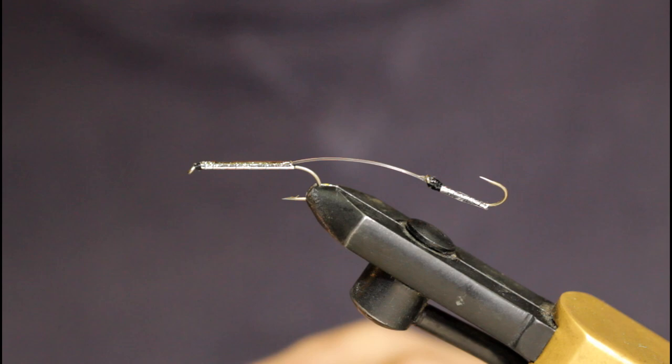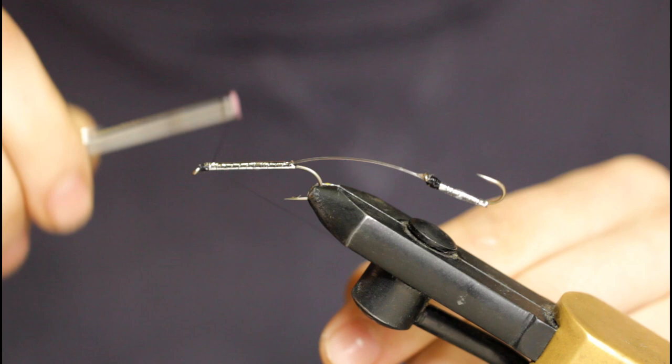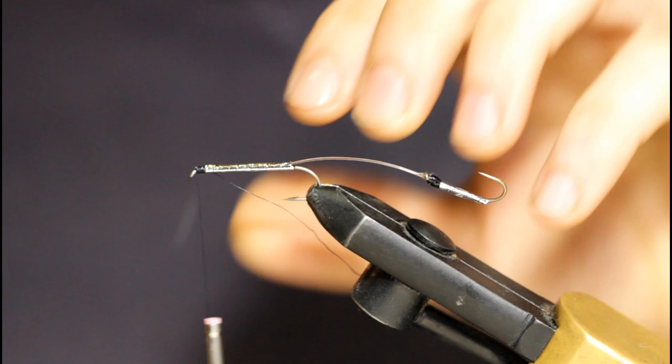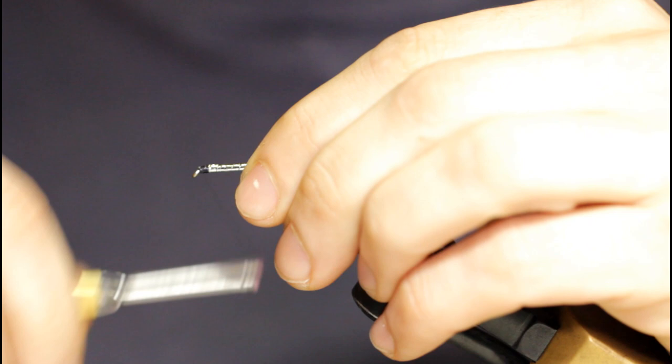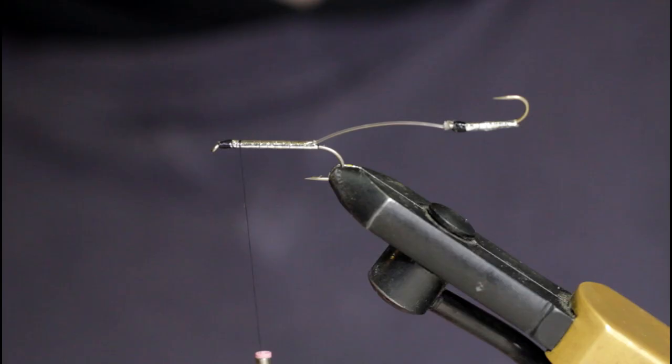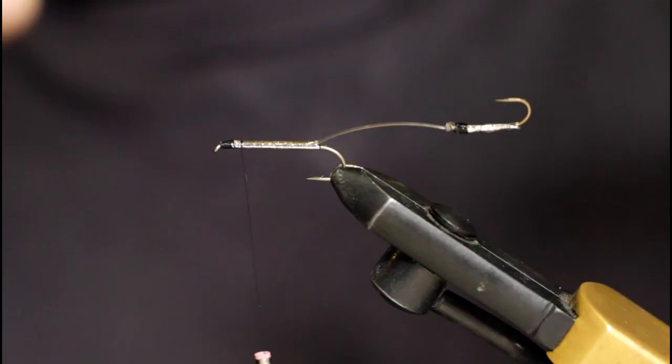Finish that up, let it dry, come back. I've got some black UTC thread in 70 denier, a little bit smaller. So start this at the head and snip off the tag.